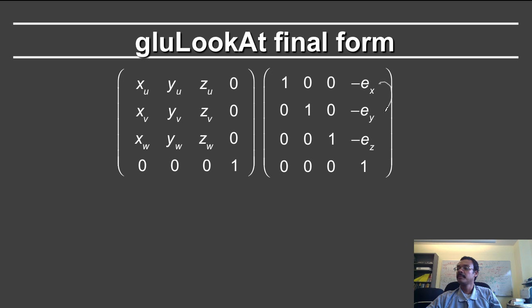And of course, do not confuse this w vector with the w homogenous coordinate, which is just 1 in this case.